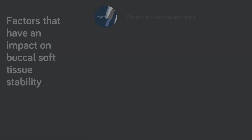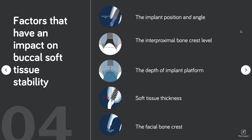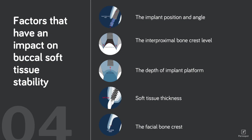What are the factors that have an impact on buccal soft tissue stability? First of all, we have the implant position and angle, and also the interproximal bone crest. We should consider this, because from articles by Tarnow in 2003, this is a very important factor to preserve the soft tissue. Also the depth of the implant platform — how deep we are placing the implant. There is an article on PerioSpot called 'How Deep Is Your Implant' that you will find very interesting. Another important factor is the soft tissue thickness.